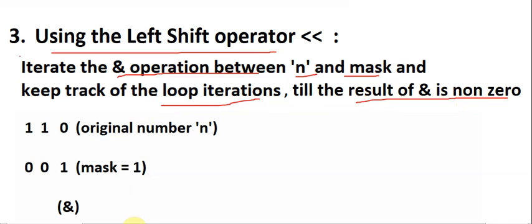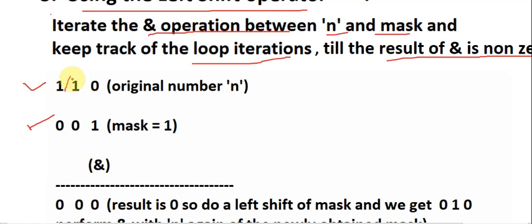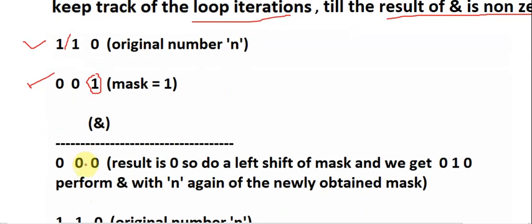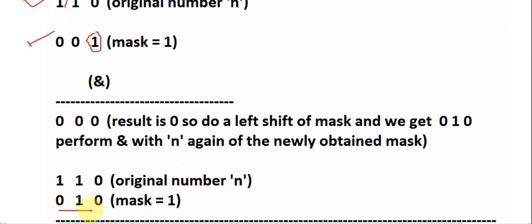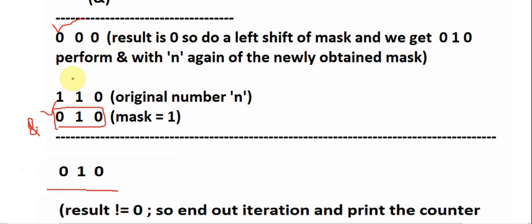For example with number six, the mask starts at one. The idea is to left shift the mask until the AND operation hits the rightmost set bit. On the first AND operation we get zero, so we left shift the mask by one. We do the AND again with the shifted mask and number n — this time the two ones align, and we finally get the non-zero result where the rightmost set bit information is saved and the rest of the bits are wiped away.